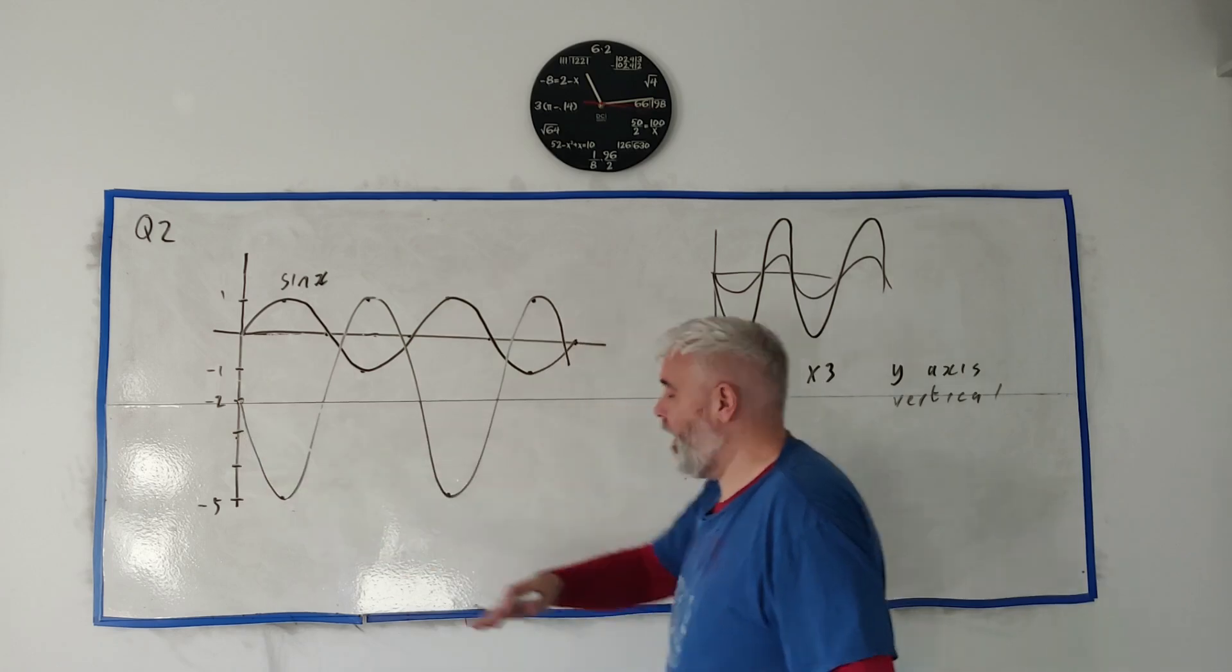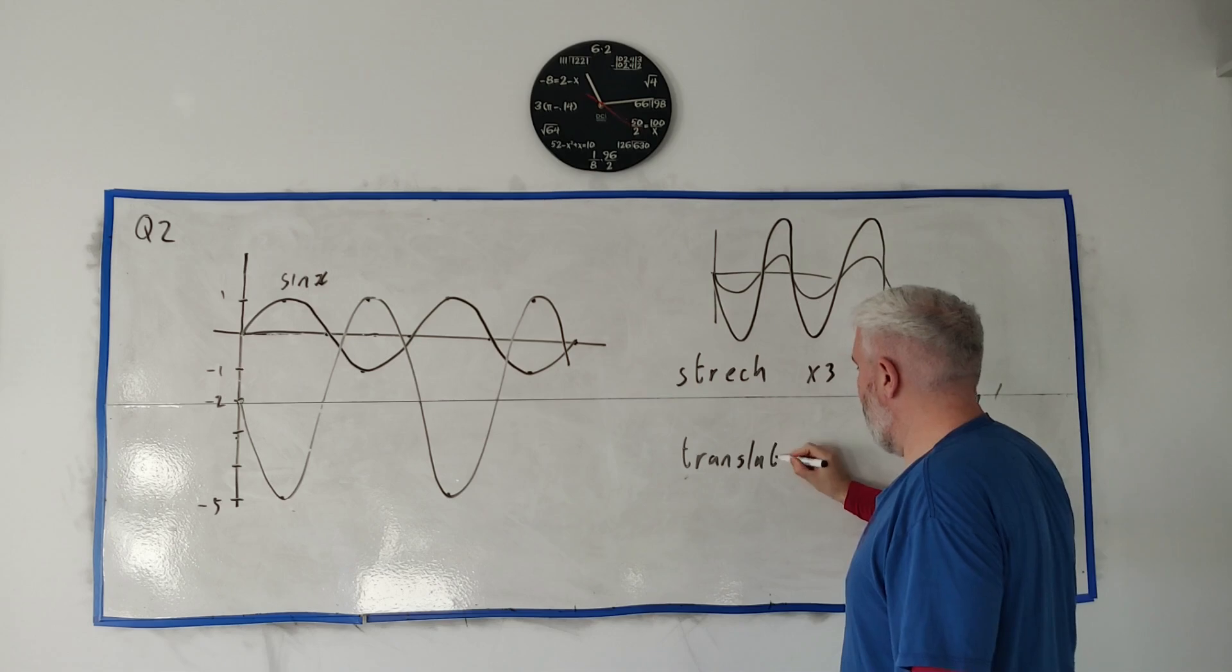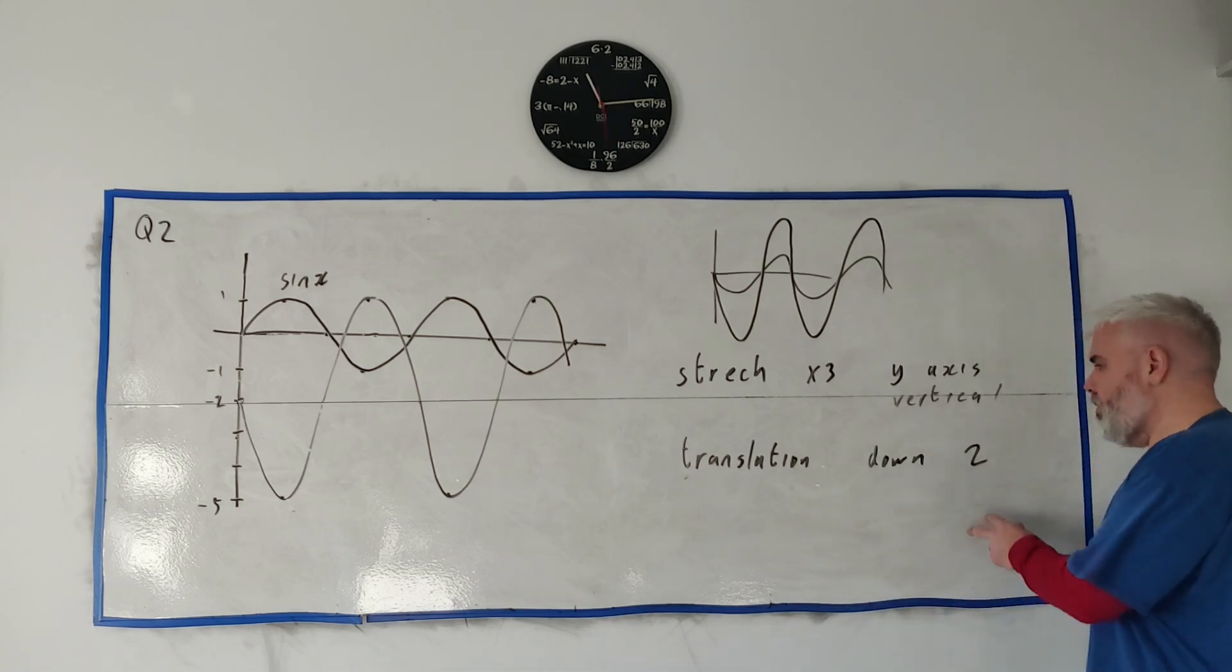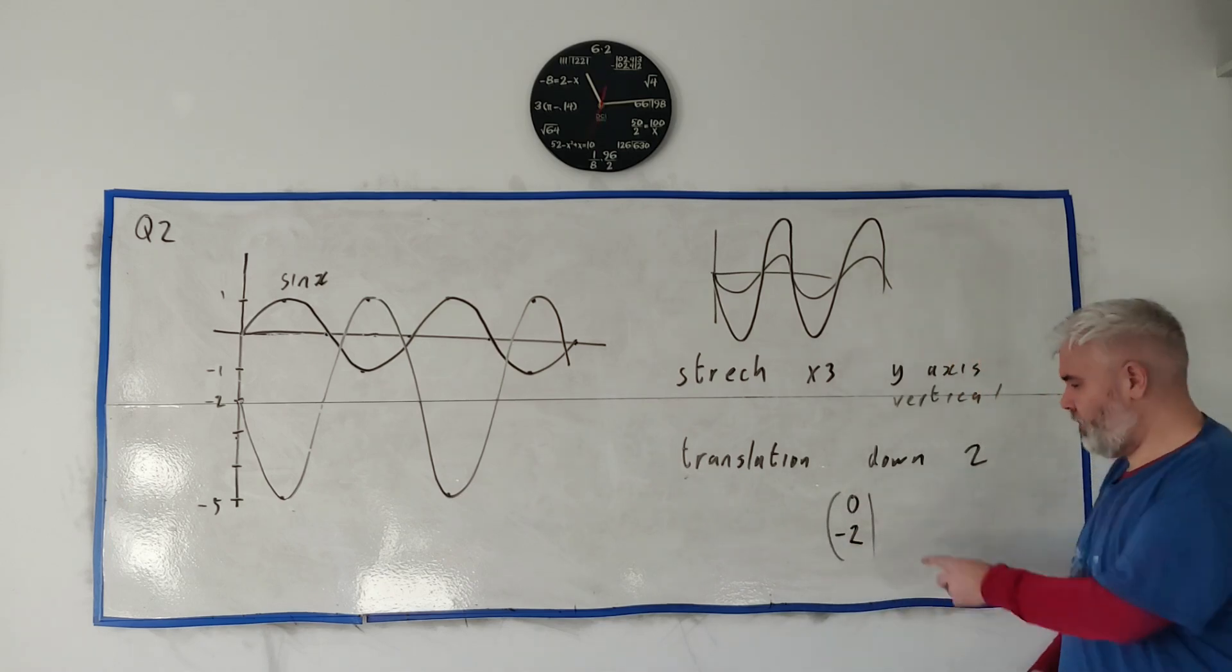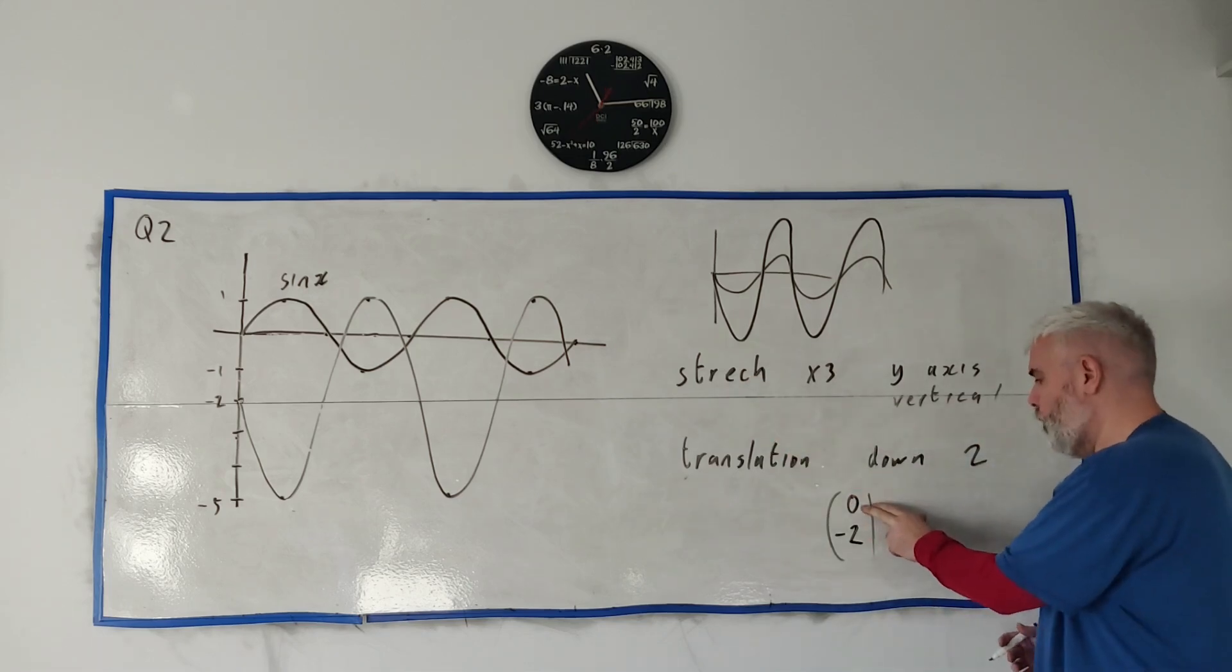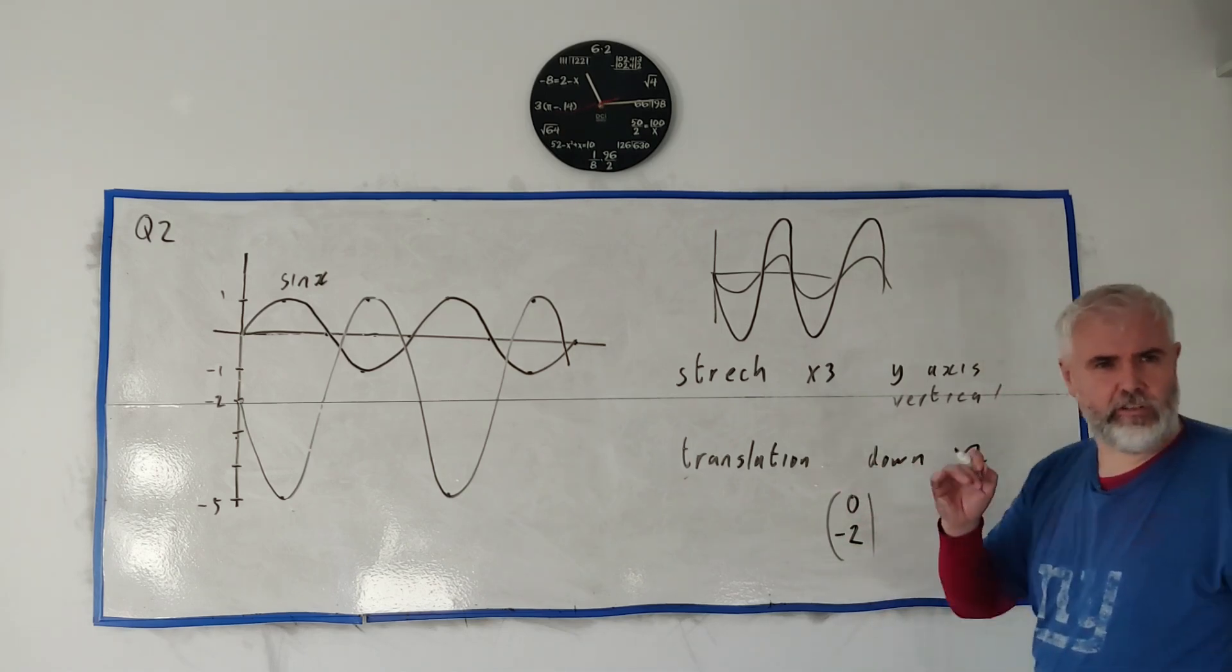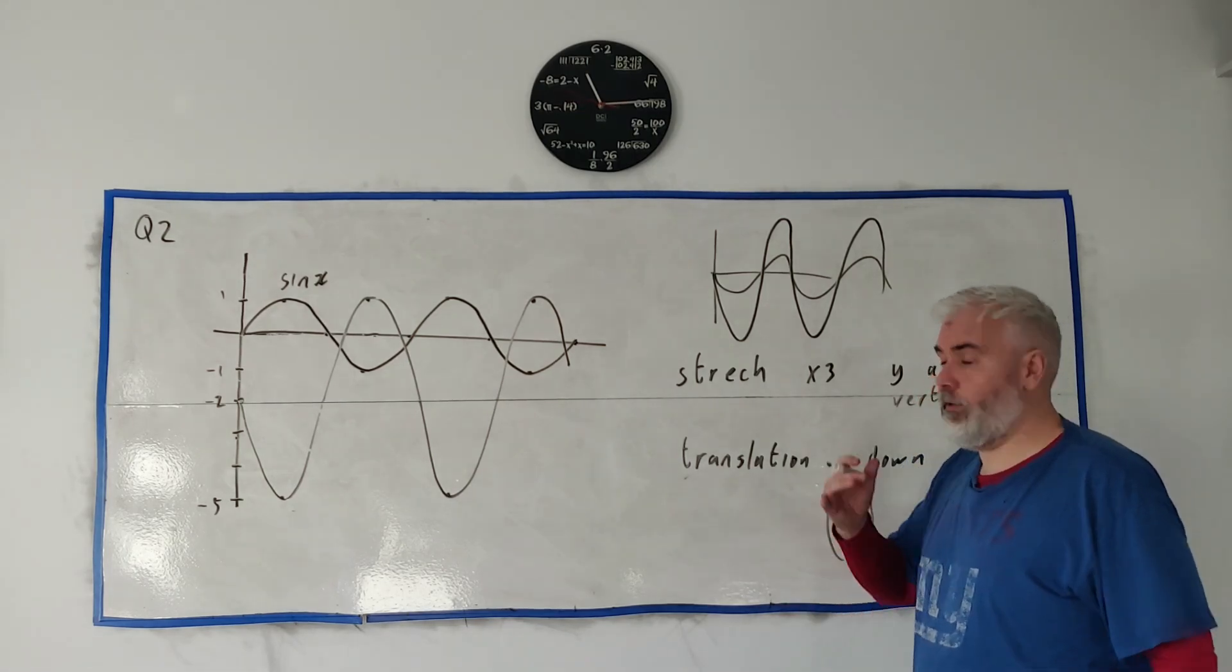And then you would get to this. So that I would call a translation. You could just say translation down two. You could say translation zero and minus two. That just means you're translating it nowhere left to right but you're translating up and down. You're going down, that's what the minus means, two. So there's lots of things you can do here. You can use English, you can use a bit of maths. They'll accept lots of things once you're getting roughly the right idea.